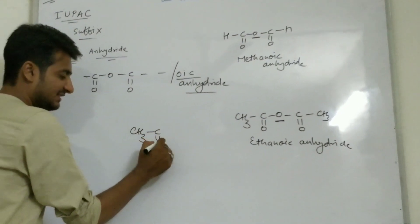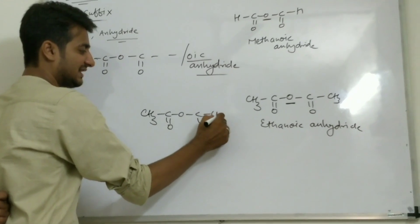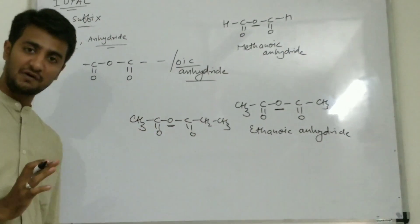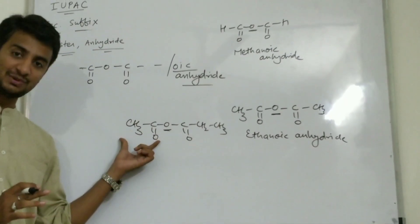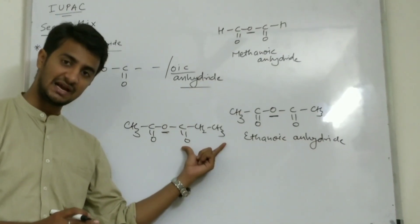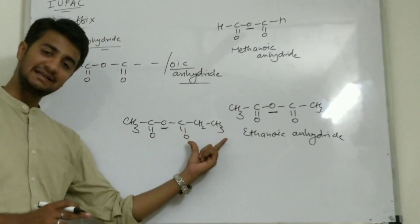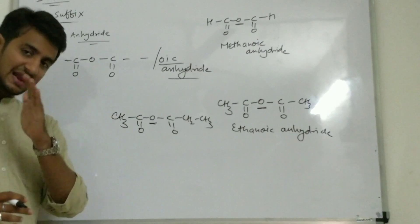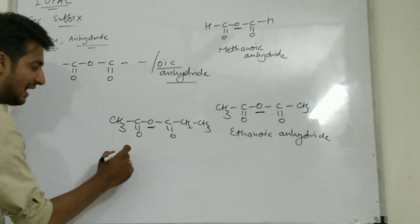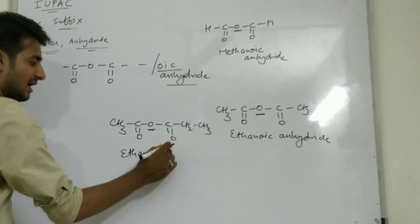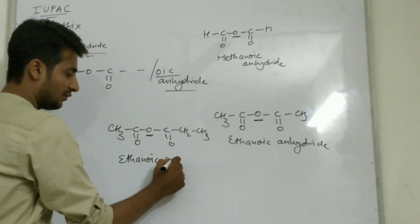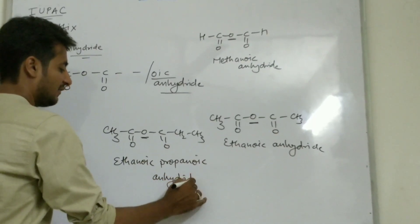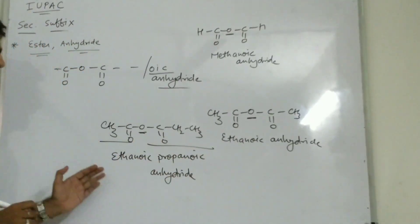In this case: CH3 — C double O — O — C double O — CH2 — CH3. Consider this oxygen. On both sides of oxygen there are different numbers of carbons. On the left side of oxygen there are 2 carbons — ethanoic. On the right side there are 3 carbons — propanoic. The suffix will be anhydride. We start with the lesser number of carbons, so the name of this compound will be ethanoic propanoic anhydride.